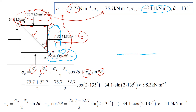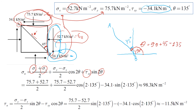Now we find theta. We have the horizontal line and plane A-B. We start from the horizontal line on the right hand side and measure the angle to the plane — always do it this way. Since the given angle is 45 degrees and there's an additional 30 degrees, theta = 30 plus 45 = 135 degrees.